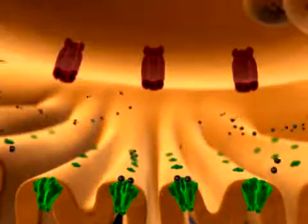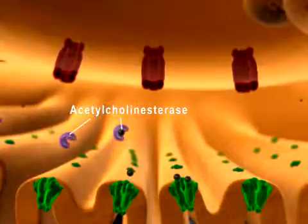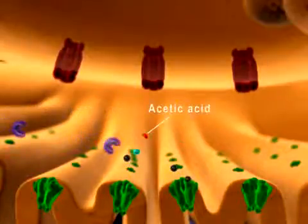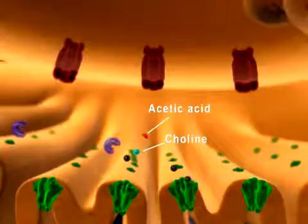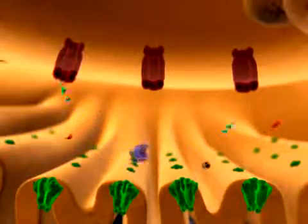Second, acetylcholine is broken down by the enzyme acetylcholine esterase to acetic acid and choline. Choline is then transported into the axon terminal for the resynthesis of acetylcholine.